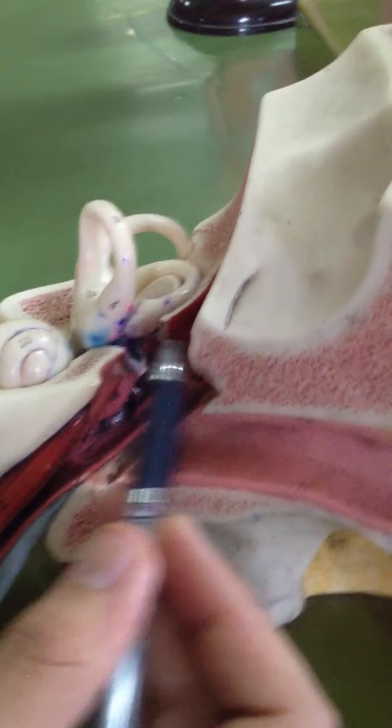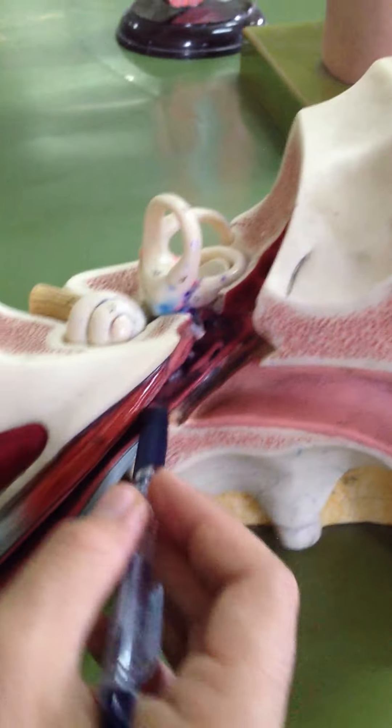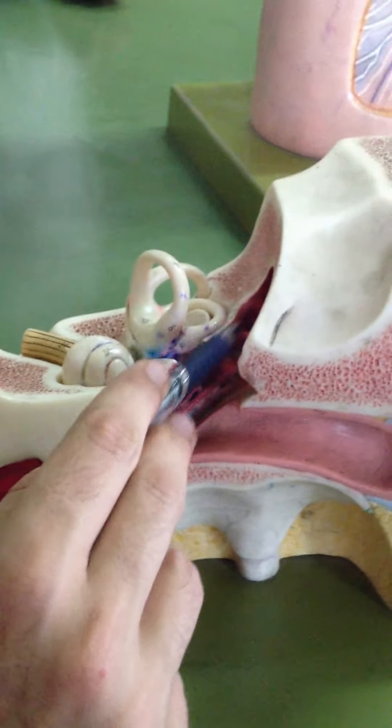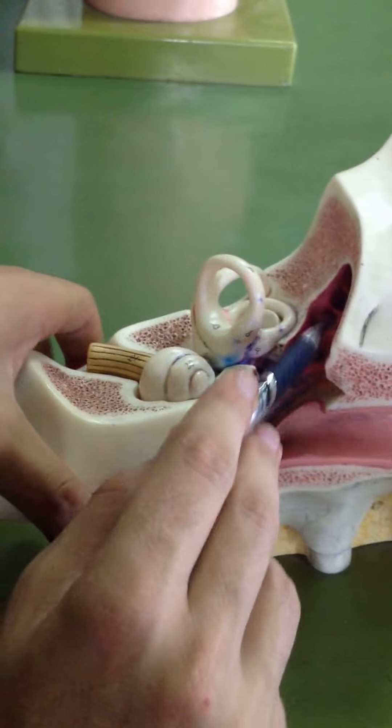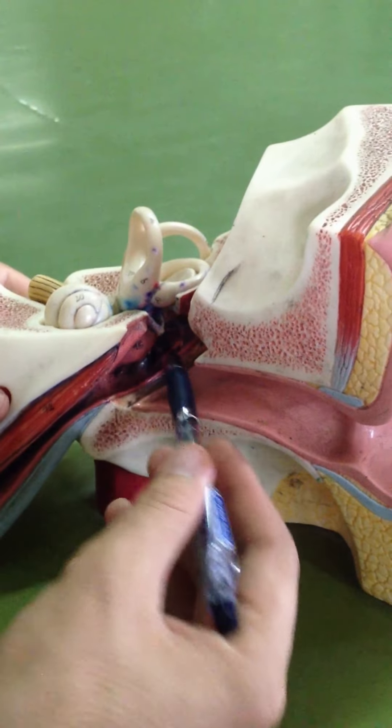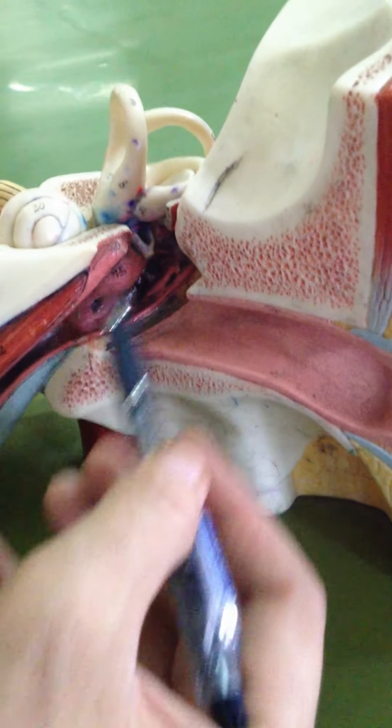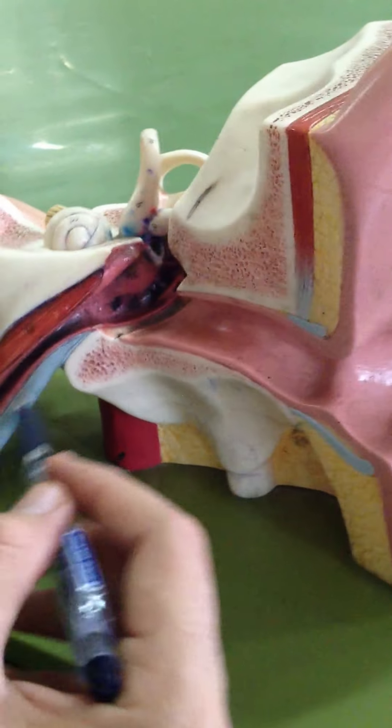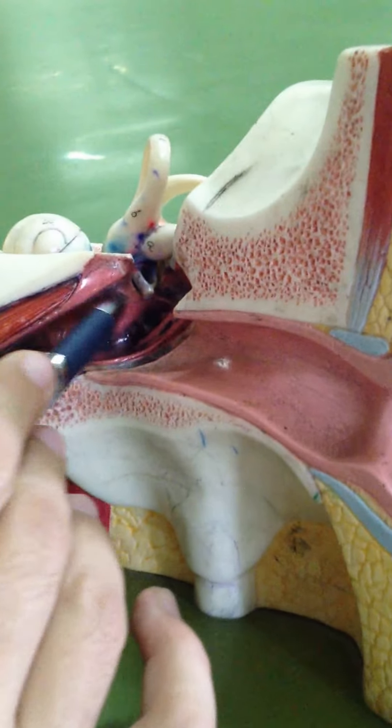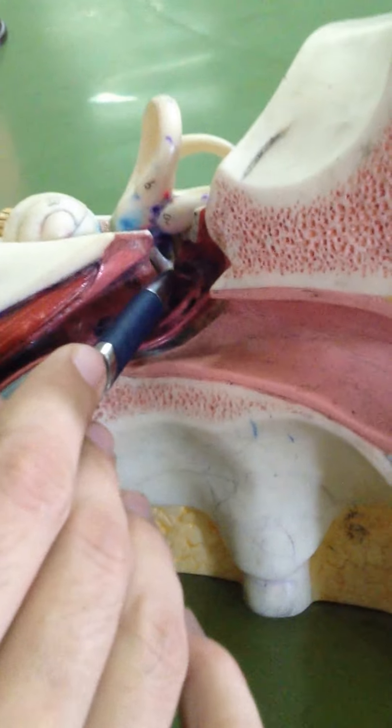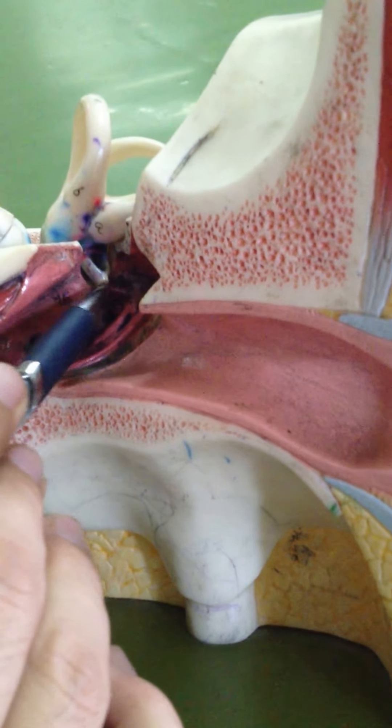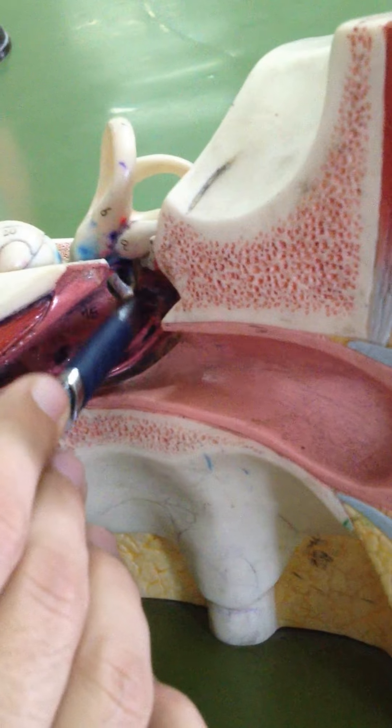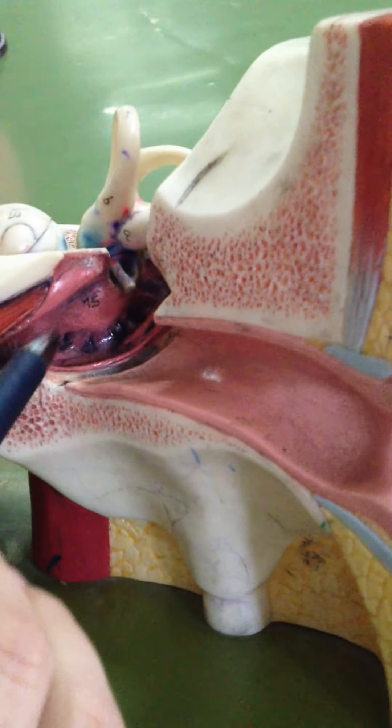Middle ear cavity. Outer surface of middle ear cavity, superior surface, posterior wall of middle ear cavity, medial wall of middle ear cavity or anterior wall of middle ear cavity. Common ear cavity. Stapes bone. Oval canal or oval window. Round window.